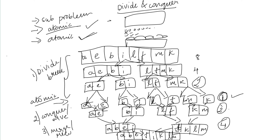This may seem confusing, but if you watch this video carefully there will be clarity. Our goal was to sort 8 characters in alphabetical order. We divided 8 into 4, then 4 into 2, reaching our atomic sub-problems.